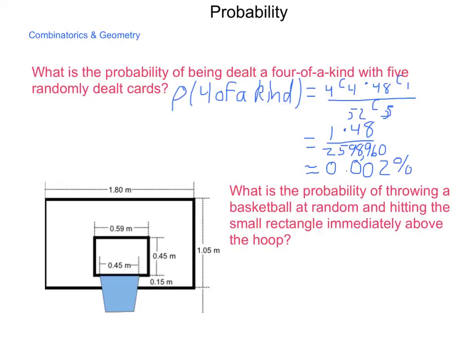Geometric probability says that we're looking at areas of occurrences. I have shown here the picture of a backboard with dimensions for an NBA hoop. What's the probability of throwing a basketball at random and hitting the small rectangle immediately above the hoop? The hoop is the blue section. The probability of hitting that small rectangle is going to be its area divided by the area of the entire item. Converting this into centimeters instead of everything in meters, we'll have 59 centimeters times 45 centimeters divided by 180 centimeters times 105 centimeters.